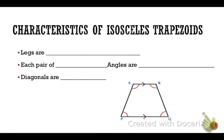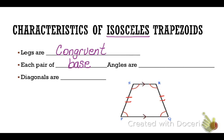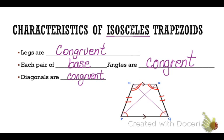We have a very special kind of trapezoid called an isosceles trapezoid, and that is a trapezoid where the legs are congruent. In an isosceles trapezoid, and only when it's isosceles, each pair of base angles are congruent. Mark up your diagram accordingly. The diagonals of an isosceles trapezoid are also congruent.